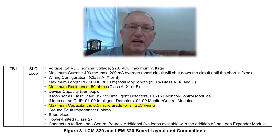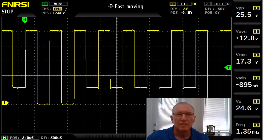Let's have a closer look at the Notifier 30-30 signaling line circuit with an oscilloscope. Make sure you check the manuals for your particular panel to find out what the maximum resistance and capacitance allowed on the SLC circuit is. You need to have a baseline in order to understand what the waveform should look like.